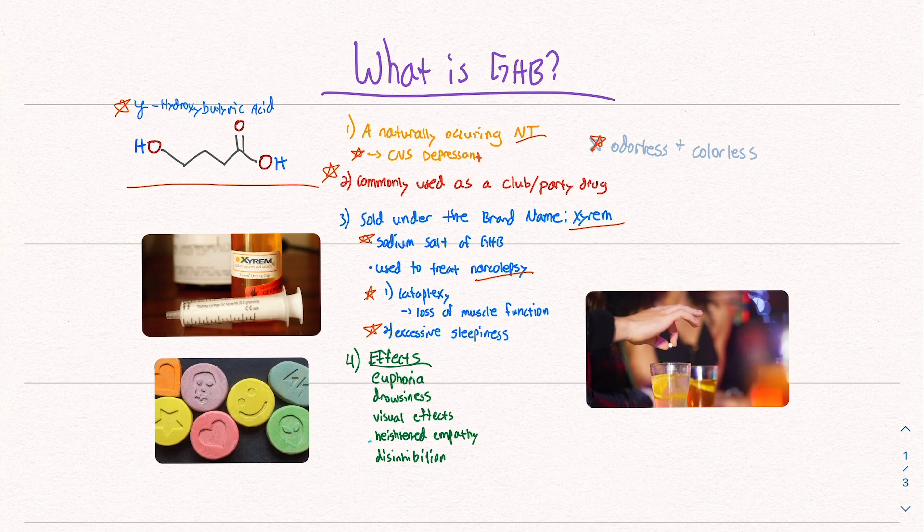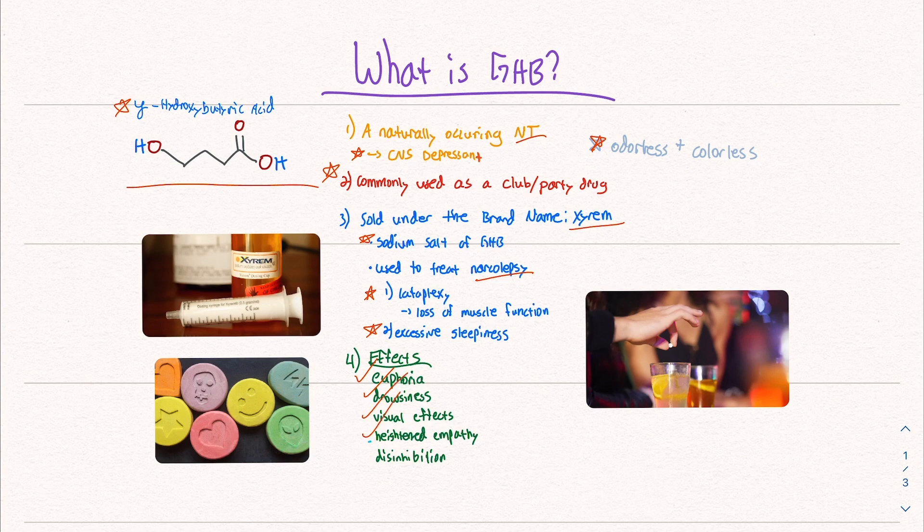The effects of GHB can include euphoria, drowsiness, visual and auditory hallucinations, and heightened empathy. This is similar to drugs like MDMA.